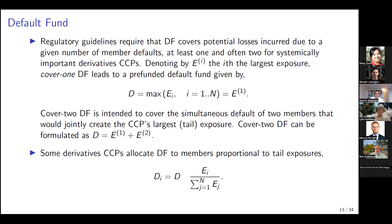Regulatory guidelines ask CCPs to specify and size the pre-funded default fund conditional on the largest member default for systemically important security CCPs—the so-called cover 1 case—or conditional on the simultaneous default of two members for systemically important derivative CCPs—the cover 2 case. In the cover 1 case, D equals E_1. In the cover 2 case, D equals E_1 plus E_2. The allocation of this total default fund to members is often proportional to their tail exposures, so member i's contribution to the pool of pre-funded default fund is proportional to its tail exposure.